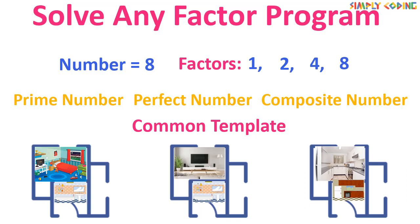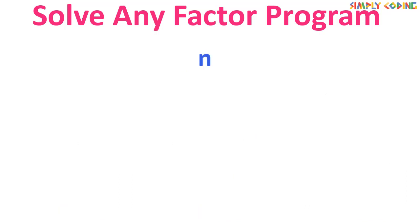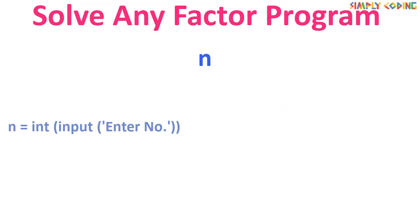We start with a number n for which we need to find factors. You could be asked to write a program and take in a number from the user using an input function, or you may be asked to implement a program as a function where you get the number n as a parameter. For our program, I will assume we have got n from any of these methods.